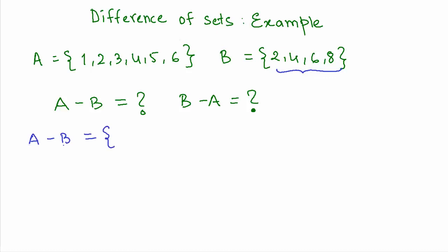All this implies is those elements which are in A but not in B, which means we exclude the common elements. So 1 is present only in A; 2 is present in A and B both, so we don't consider it; 3 is present only in A; 4 is present in A and B both, so that is not considered; 5 is present only in A; 6 is present in A and B, so it's not considered.